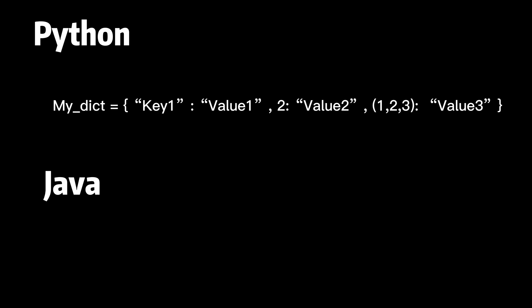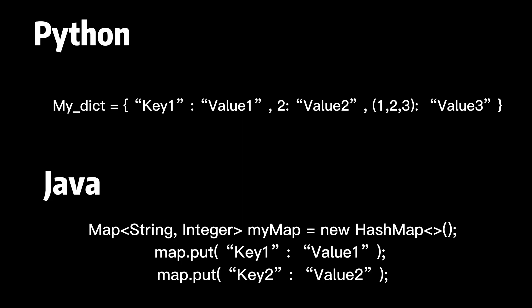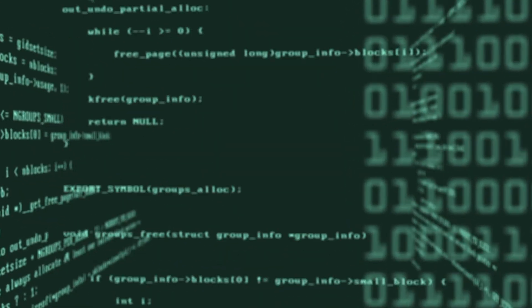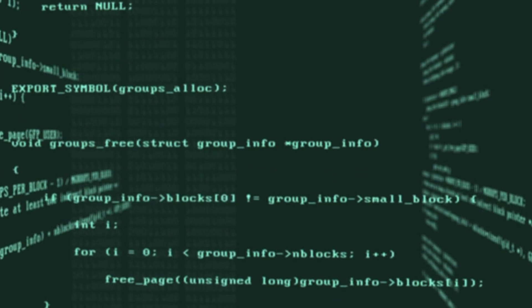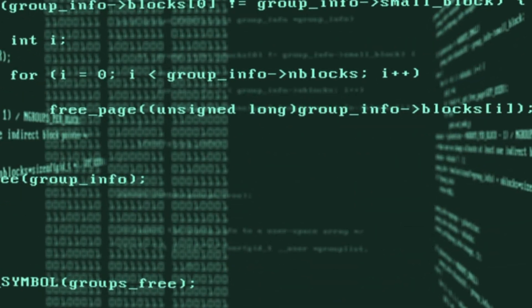In Java though, the keys and value types must be specified when the map is declared. For example, if you want to create a map that has string keys and integer values, you would declare like this. Using different types of keys can make the code less readable and harder to debug. When we don't define data types in Python it's not because data types are not important in Python. The problem is they are not exposed in your code.